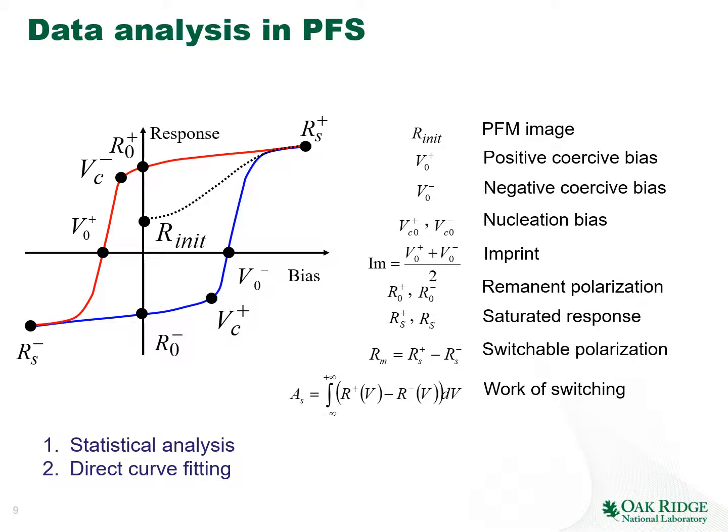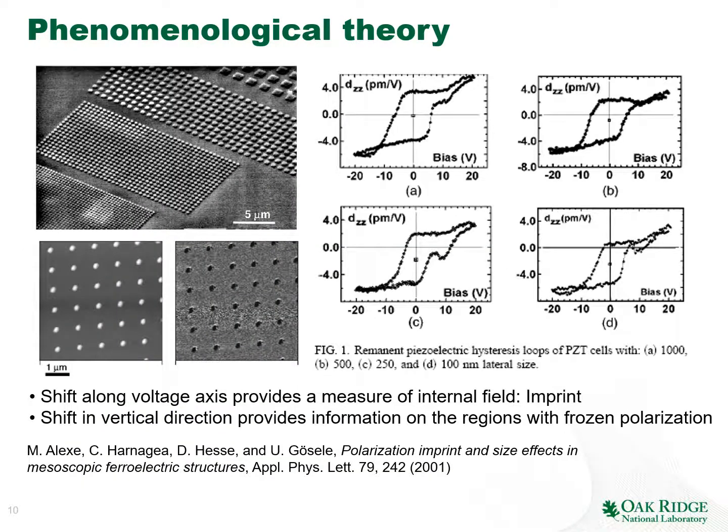Hysteresis loops do not have well-defined functional forms, so the practical way to analyze SS-PFM data is through phenomenological descriptors: remnant positive and negative polarization, nucleation biases, coercive biases, and the area under the hysteresis loop as the work of switching. These parameters can be extracted from the loops. The next question is what these parameters physically mean.